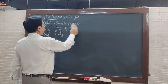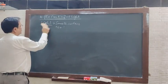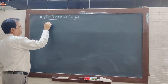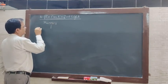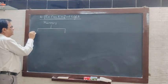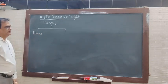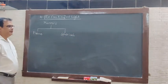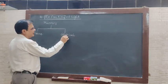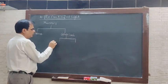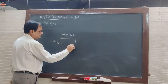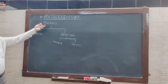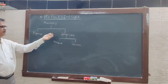Now, in 9th standard, we are going to learn about mirrors. Mirrors are of two types: plane mirrors and spherical mirrors. Spherical mirrors are further of two types: one is concave mirror, and one is convex mirror. So in 9th standard, we are going to learn all about mirrors — two types: plane mirrors and spherical mirrors.